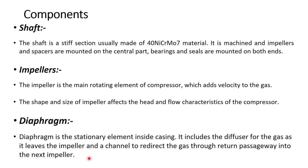Now let us see the function of various components. The shaft is a stepped section usually made of high nickel, chrome and molybdenum material. It is machined and impellers and spacers are mounted on the central part, while bearings and seals are mounted on both ends. The impeller is the main rotating element of the compressor which adds velocity to the gas. The shape and size of the impeller affect the head and flow characteristics. The diaphragm is the stationary element inside the casing, which includes the diffuser as gas exits the impeller and a channel to redirect gas to the next stage impeller.